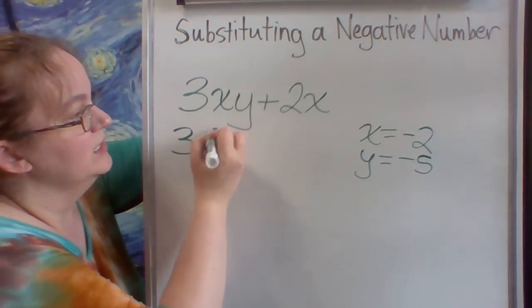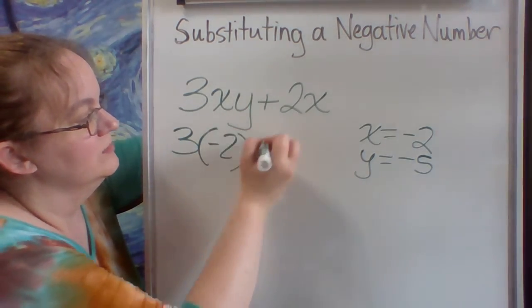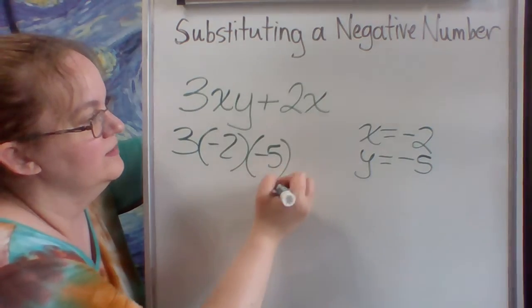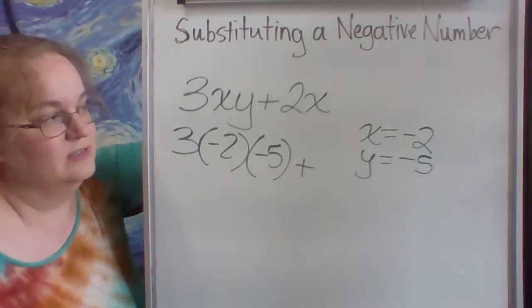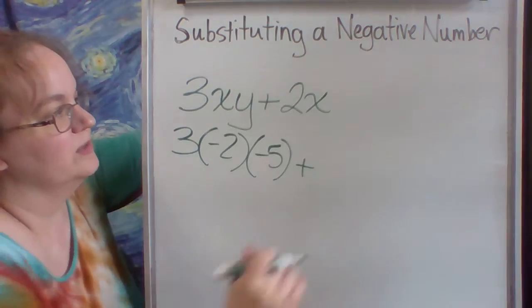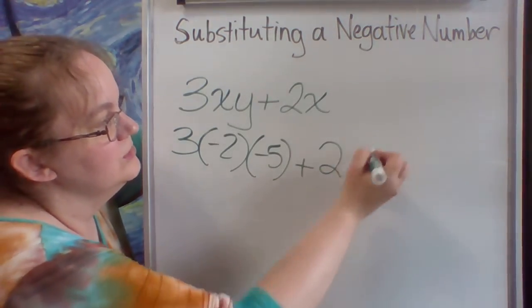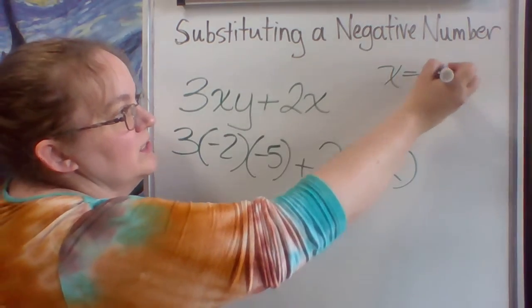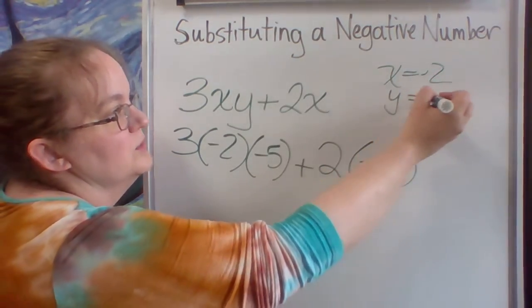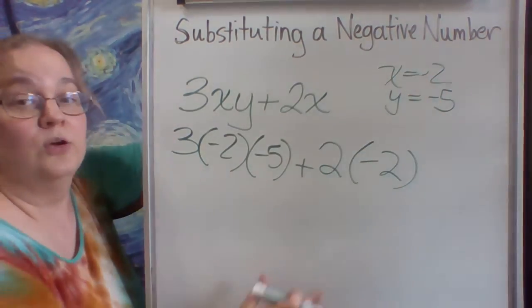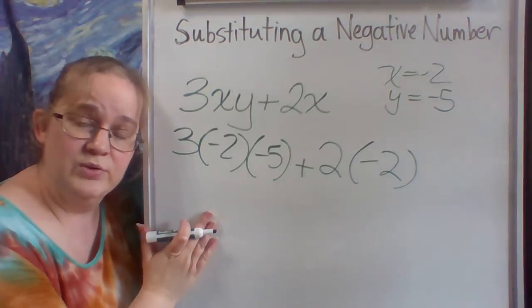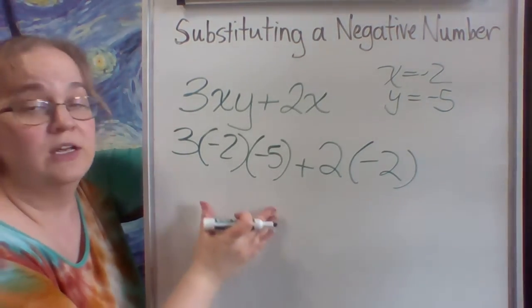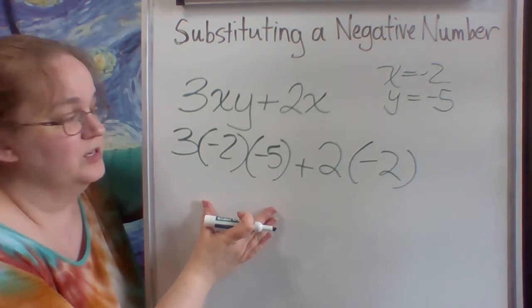So I go 3 times negative 2 times negative 5 plus, and I'm going to run out of space. I'm sorry. I put that right in the way. 2 times negative 2. Again, my x equals negative 2 and my y equals negative 5. OK, once I've substituted everything in parentheses, I follow the order of operations to simplify. In other words, I'm going to do multiplication before addition.